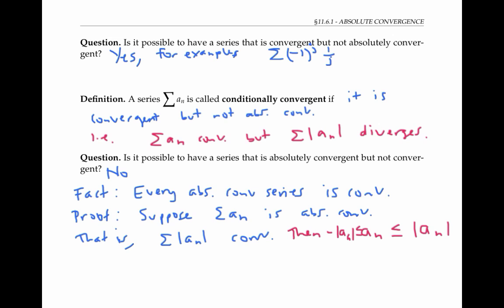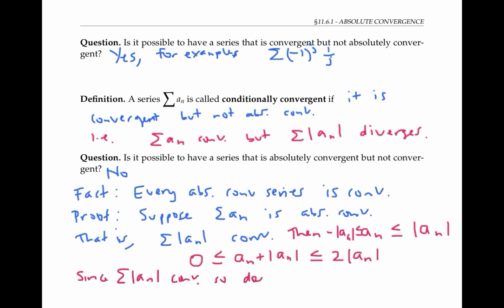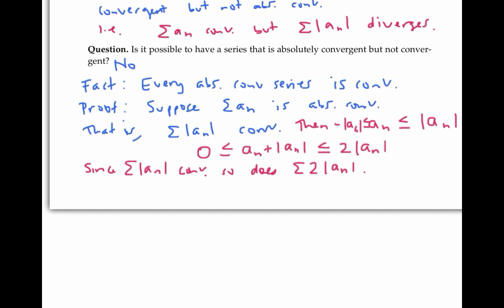But there's a nice trick to get around that difficulty: add the absolute value of a_n to all sides of the inequality. Then we get zero is less than or equal to a_n plus the absolute value of a_n, which is less than or equal to twice the absolute value of a_n. Since the sum of the absolute value of a_n converges, so does the sum of twice the absolute value of a_n, since it's just a constant multiple. Based on this inequality, which now involves terms that are greater than or equal to zero, we can conclude that the sum of a_n plus the absolute value of a_n converges by the ordinary comparison test.